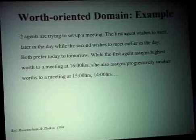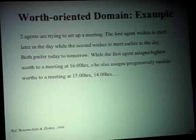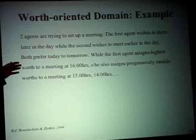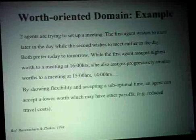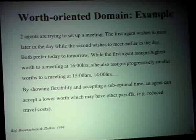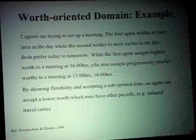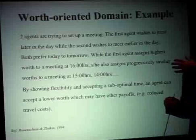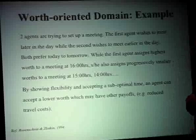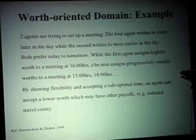Agents aim to bring about the environment state with highest value, and we assume that to do this we need some joint efforts or joint plan executed by several agents. An example of a worth-oriented domain is scheduling a meeting — either in the morning or in the afternoon. You cannot have the meeting alone; you need a partner who may have their own preferences. So we negotiate about different states, which can correspond to different meeting times. In worth-oriented domain we usually have multi-criterial utility functions — it depends not only on one element but on other characteristics. For example, time is important, but place is also important.